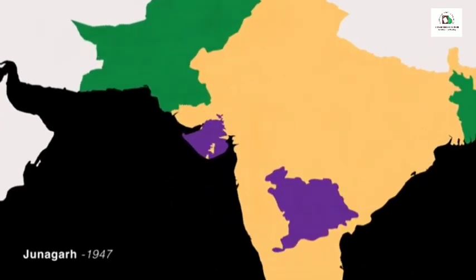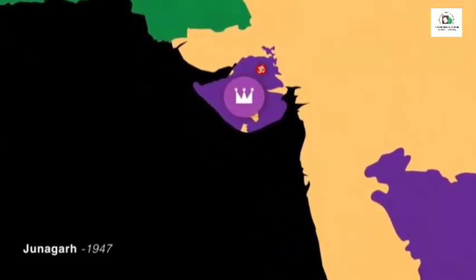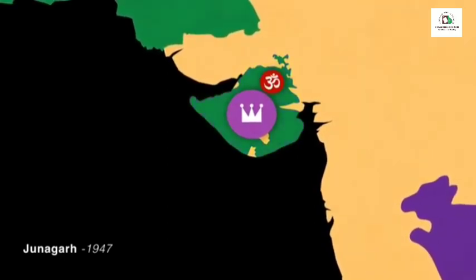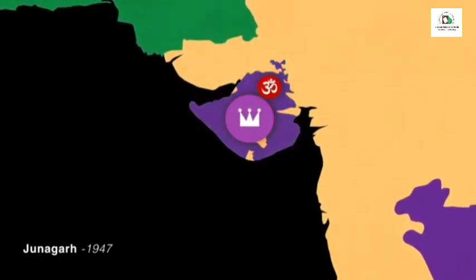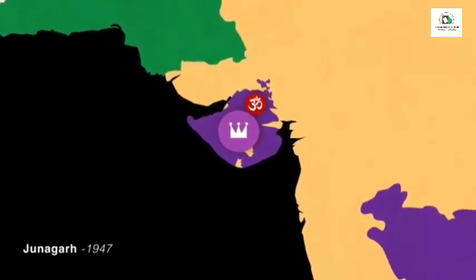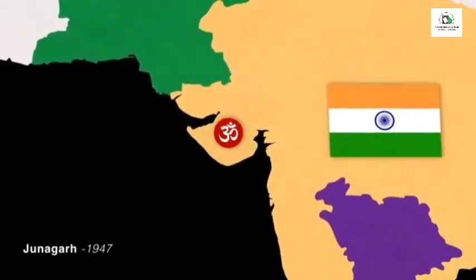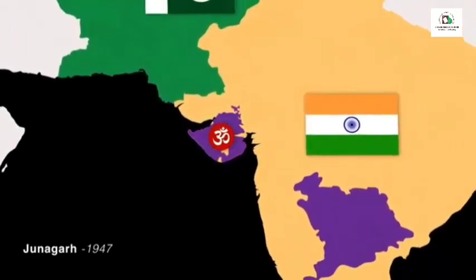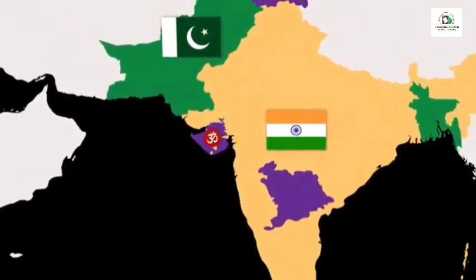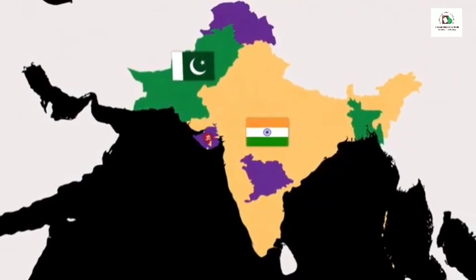The princely state of Junagadh had a Muslim ruler who ruled over a Hindu majority population. Junagadh's ruler pledged to join Pakistan even though his state's borders didn't align with it. Meanwhile, most of the Hindu population of Junagadh wanted to stay in India. With rising internal conflict and pressure from the Indian government, Junagadh held a plebiscite and the majority of the people voted to join India.